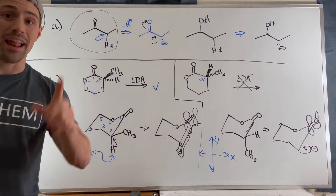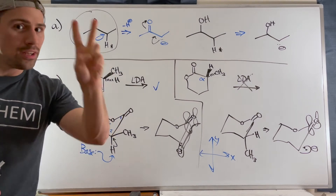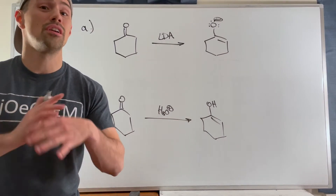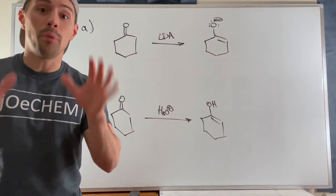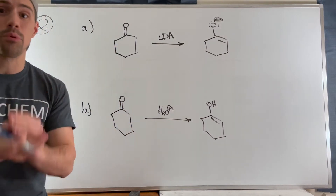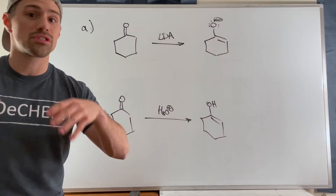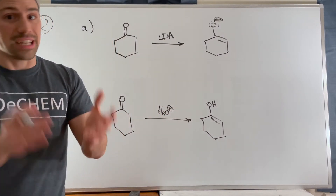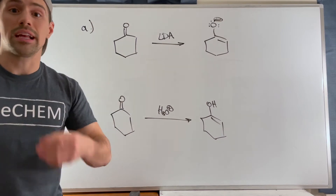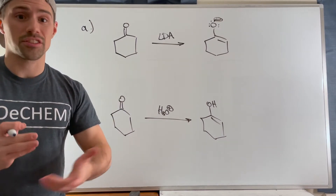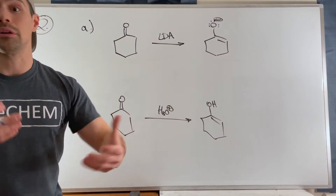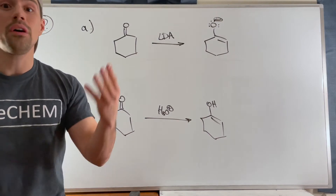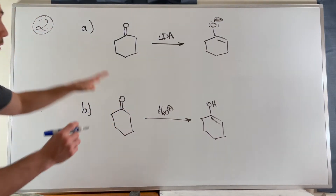Closing the book on problem one and moving on to problem two. It's super short and pretty straightforward, but it's really, really important. I can't tell you how many students are shaky with creating an enolate or enol mechanistically — it should be like the back of your hand. It's going to cause trouble when we get to aldol reactions, condensations, Michael additions, 1,4-additions, and Robinson annulations.